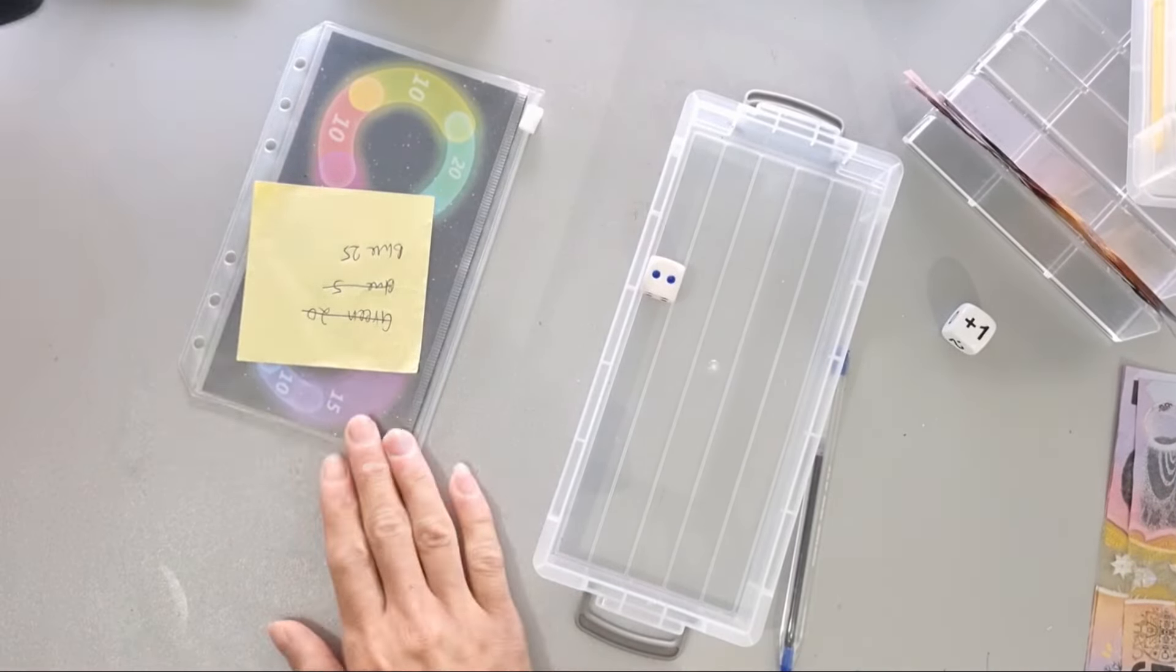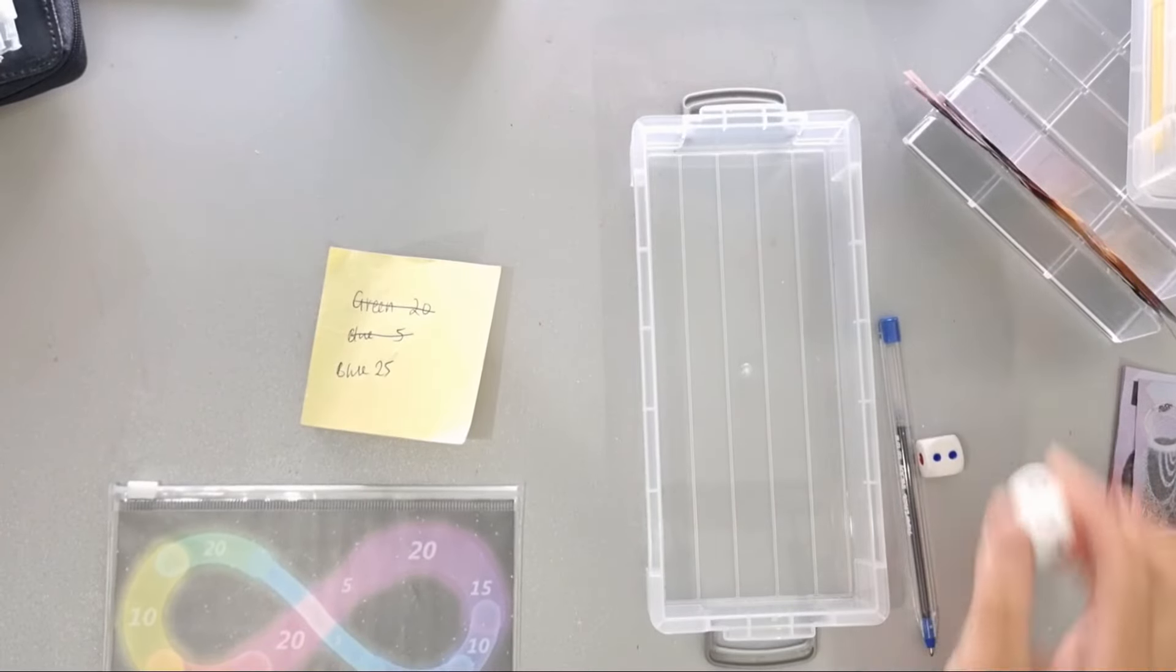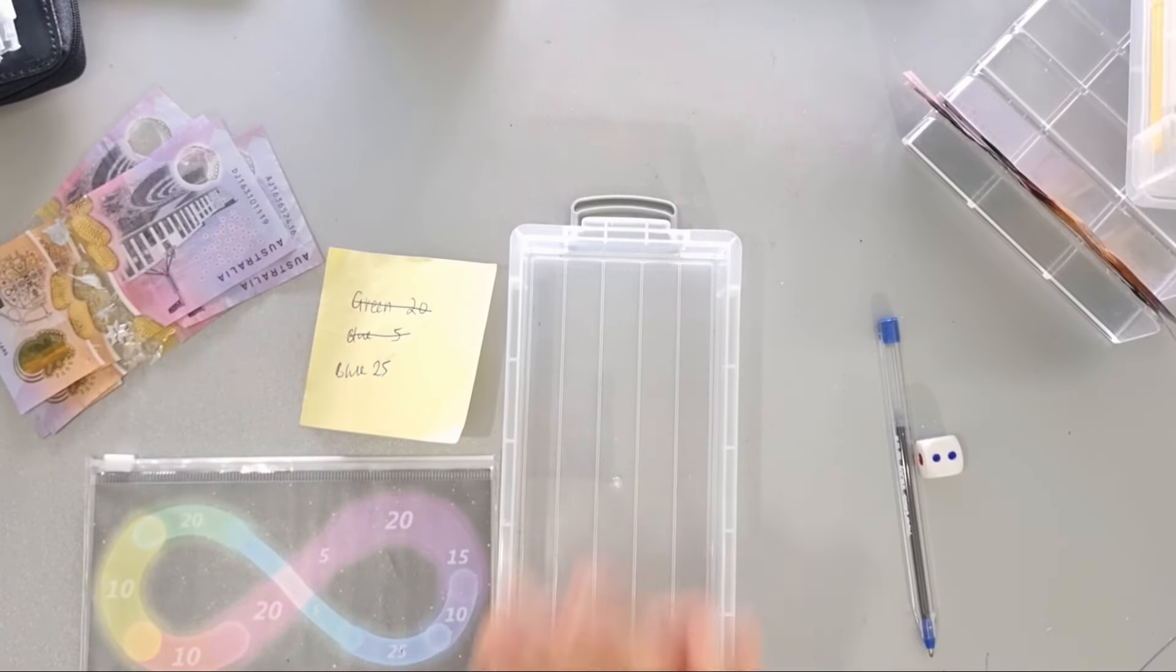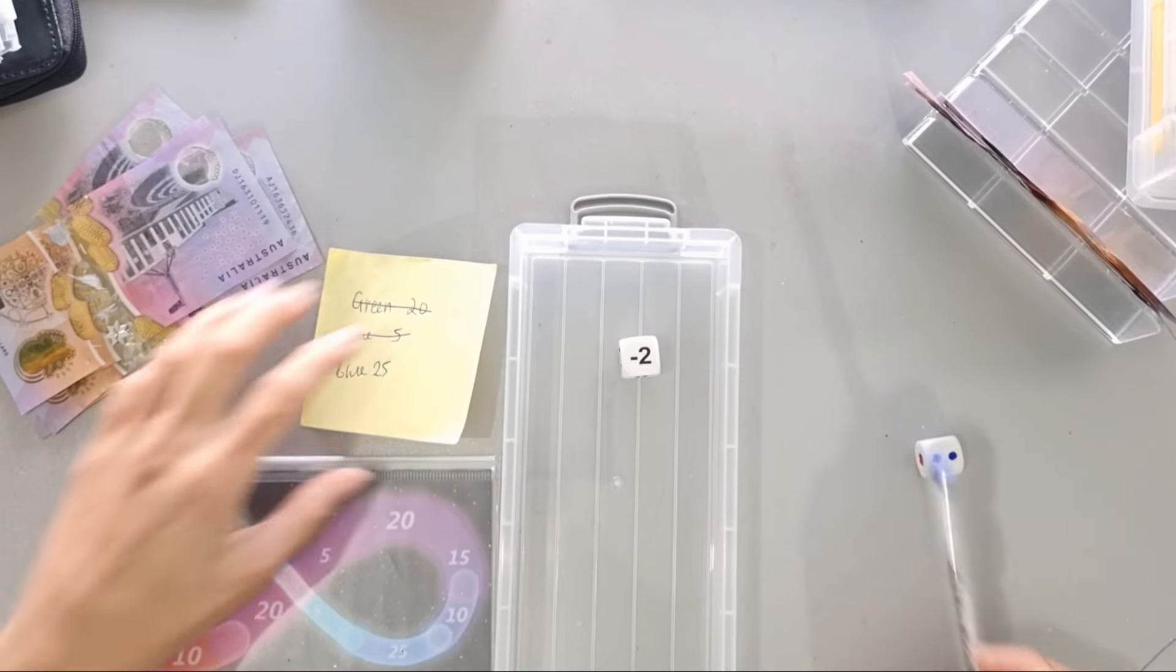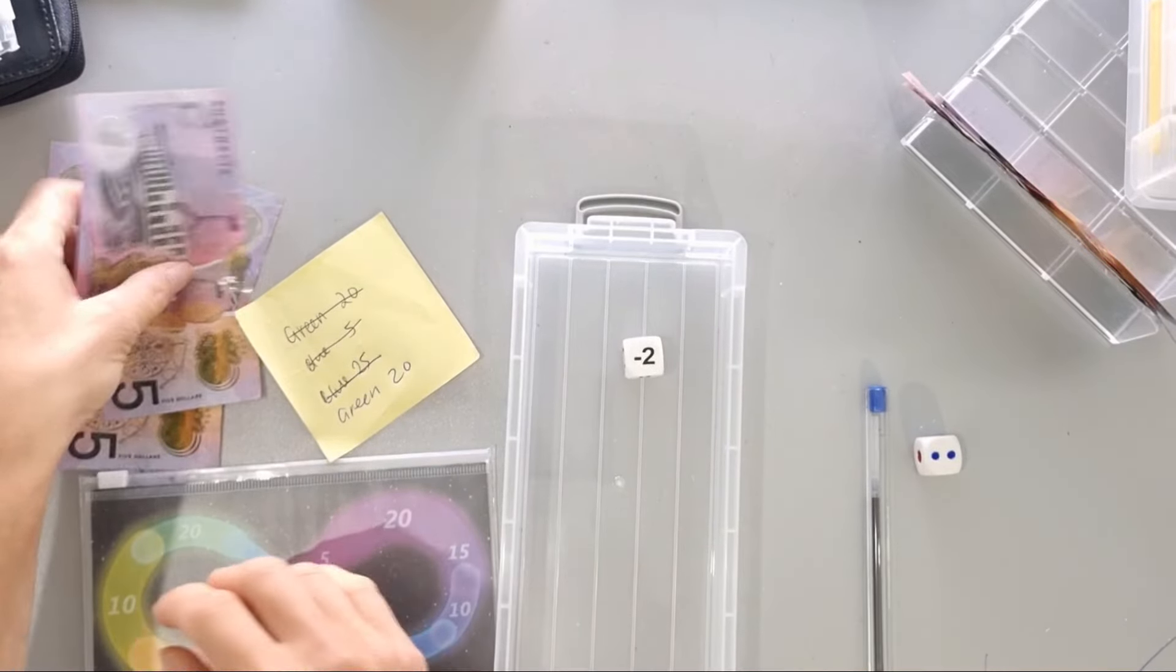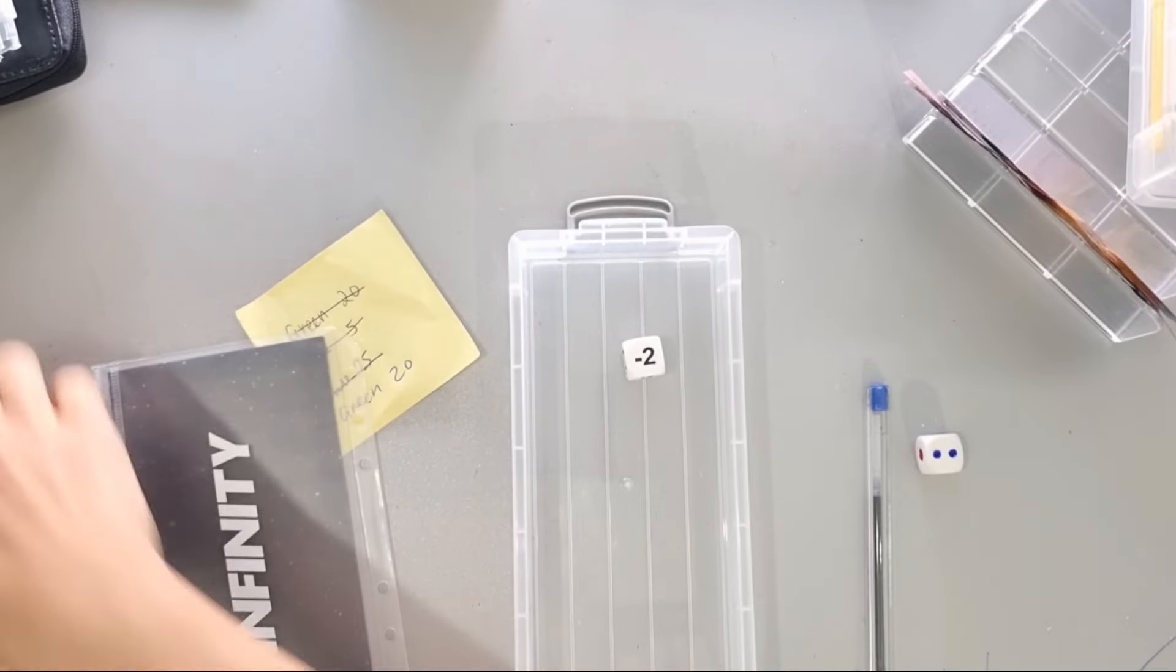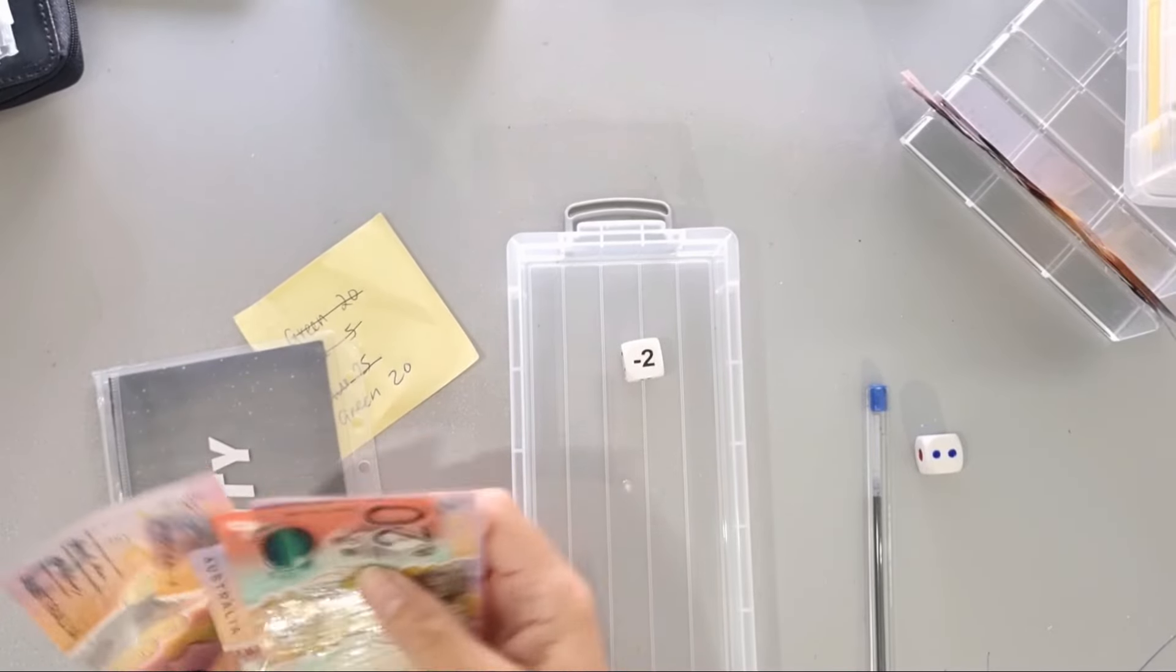Okay, then we've got the infinity challenge. Last week we landed on blue 25, so I've got my 25 here for my grocery money. Let's see how much it's going to go to the infinity challenge. Minus two, so we go backwards one, two, to green 20. So we need to add $20 and take out $5.